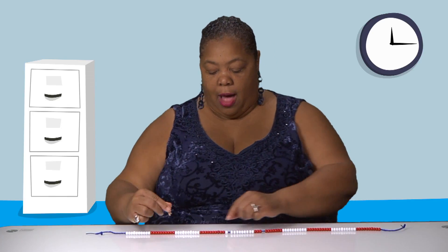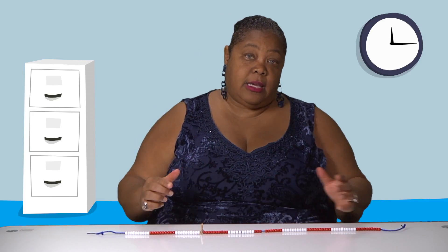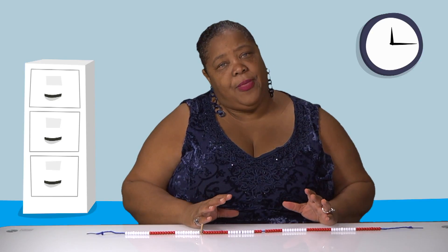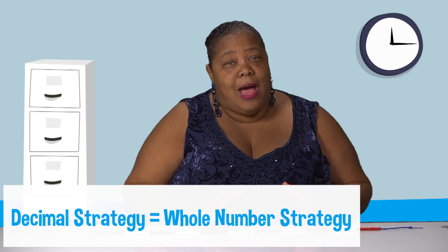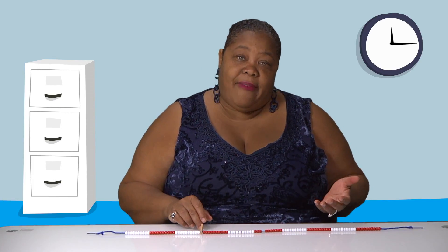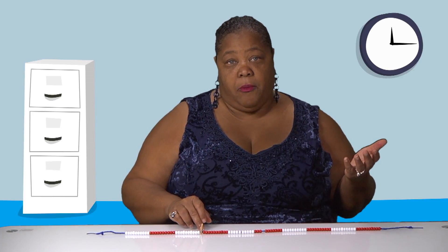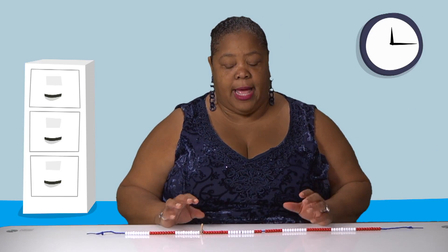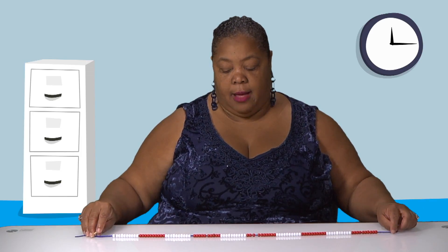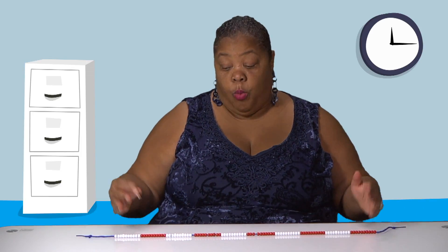We have 70 hundredths or seven tenths and we're going to subtract 49 hundredths. You can say to the kids, why don't we just take away 50 hundredths? Because it's easier — it's a friendly number. You're doing the same thing with decimals as you do with whole numbers; those strategies are the same. The numbers change, but the strategies are the same. So kids can say, I have 70 hundredths or seven tenths and I'm going to take away 49 hundredths — I'm just going to make that five tenths and then put one hundredth back because I took away too much. So that compensation really comes into play. You want to teach addition and subtraction strategies with the Beaded Number Line.